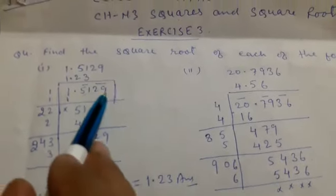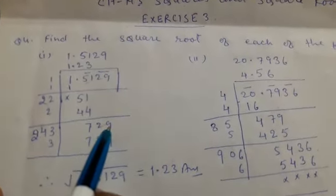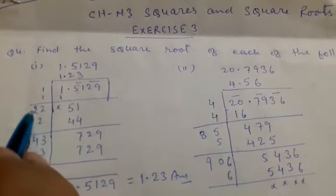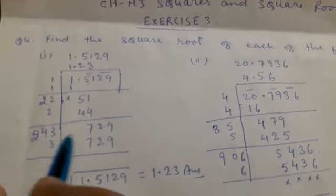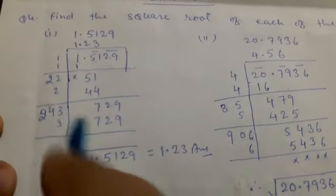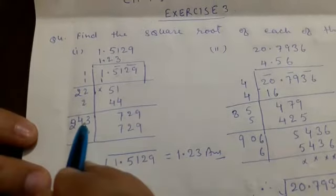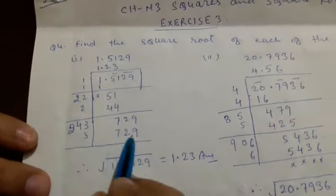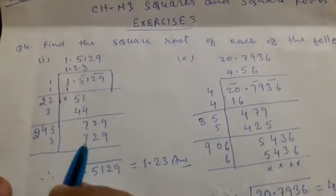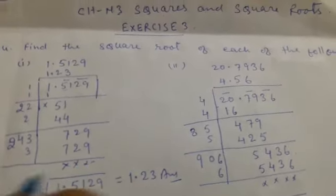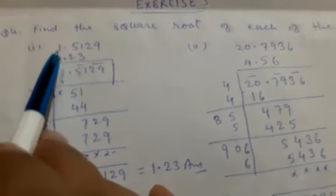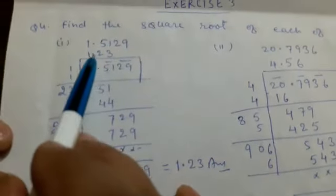After subtracting 44 from 51 we get 7, and we bring down 29 to get 729. We add 2 plus 2 to get 4. Now we find what number to multiply: 243 times 3 equals 729. After subtracting we get zero. So the square root of 1.5129 is equal to 1.29. That is our answer.